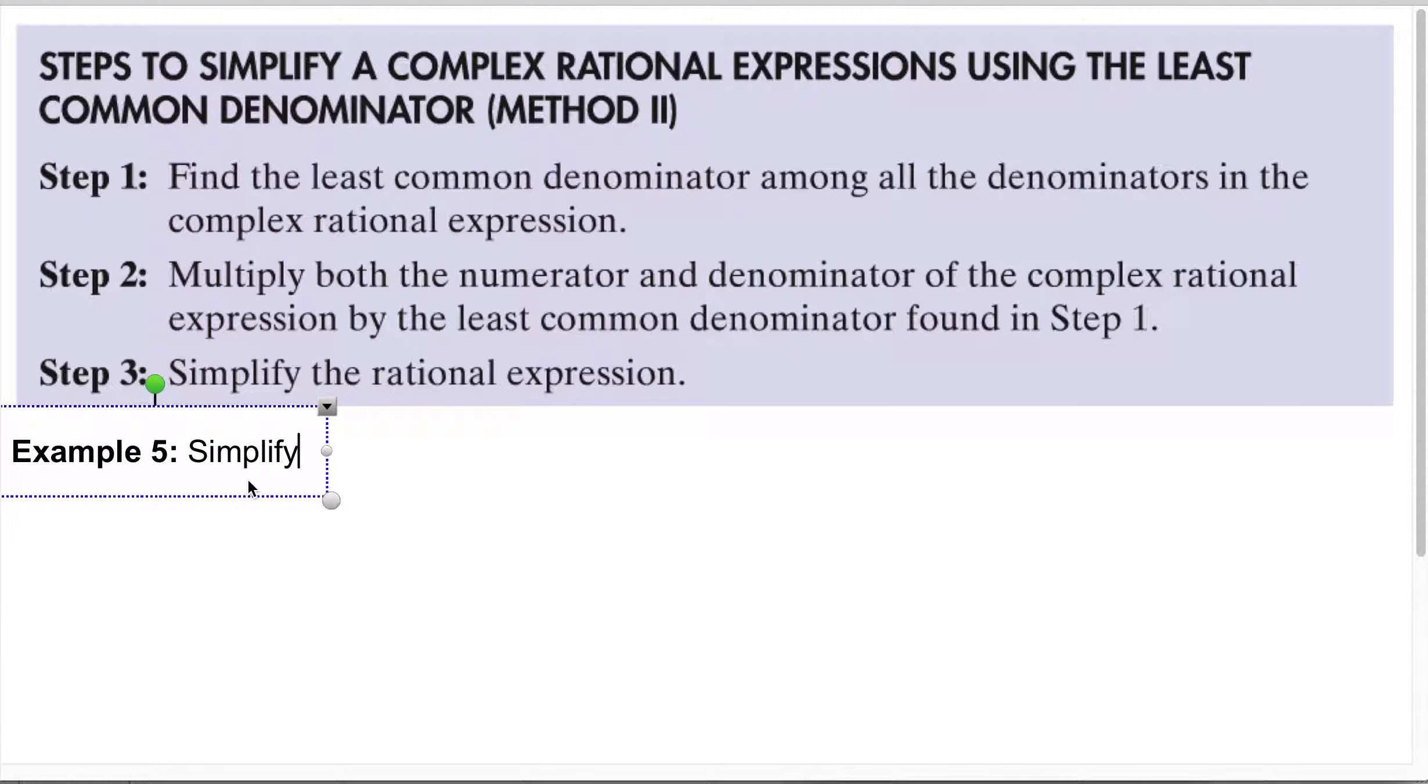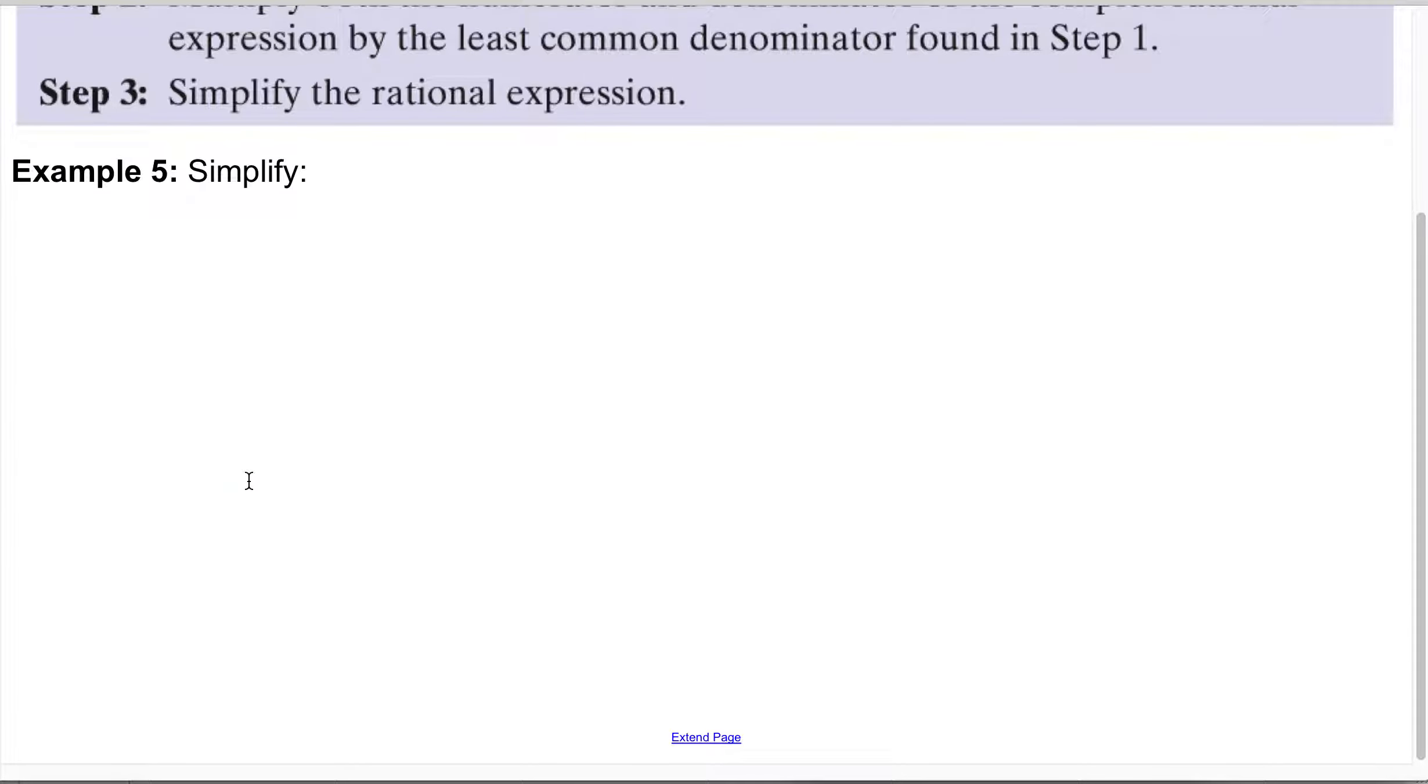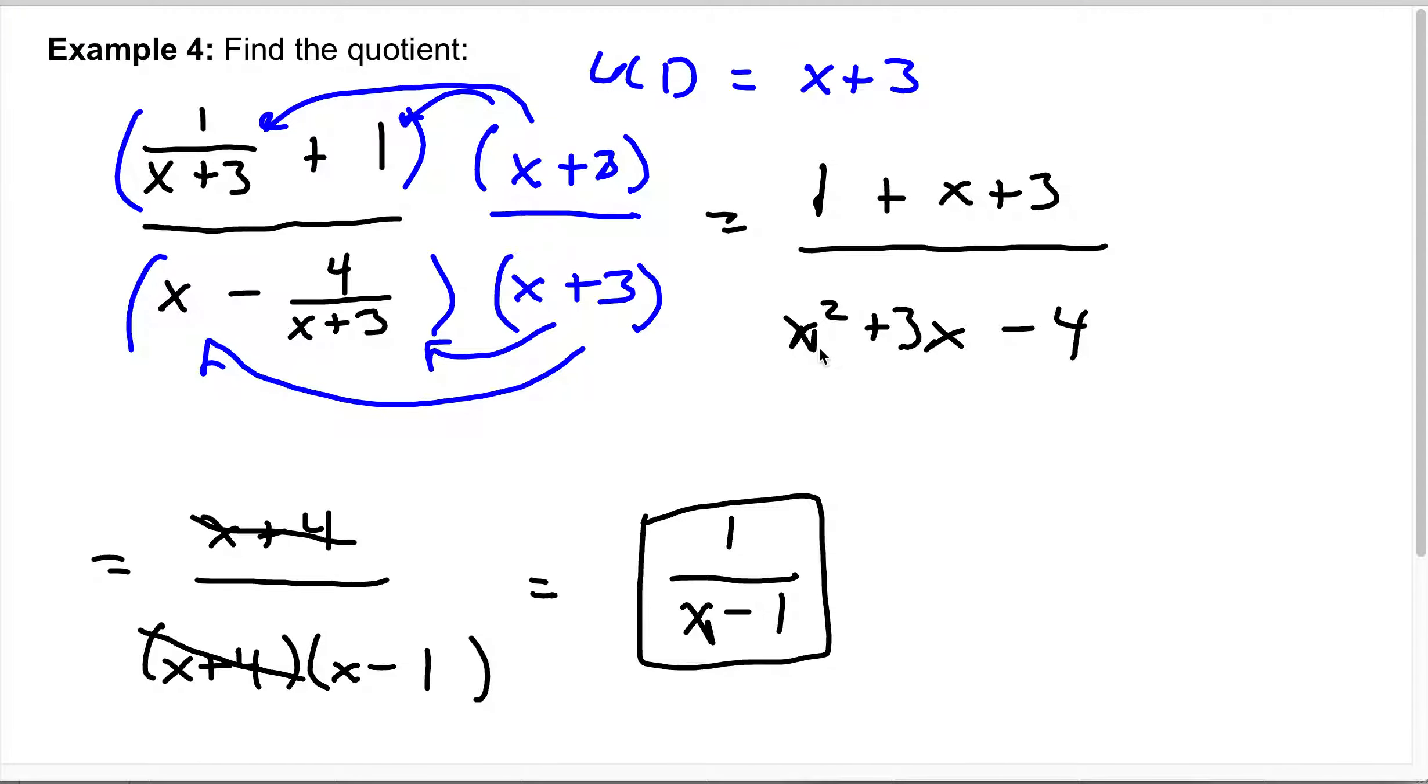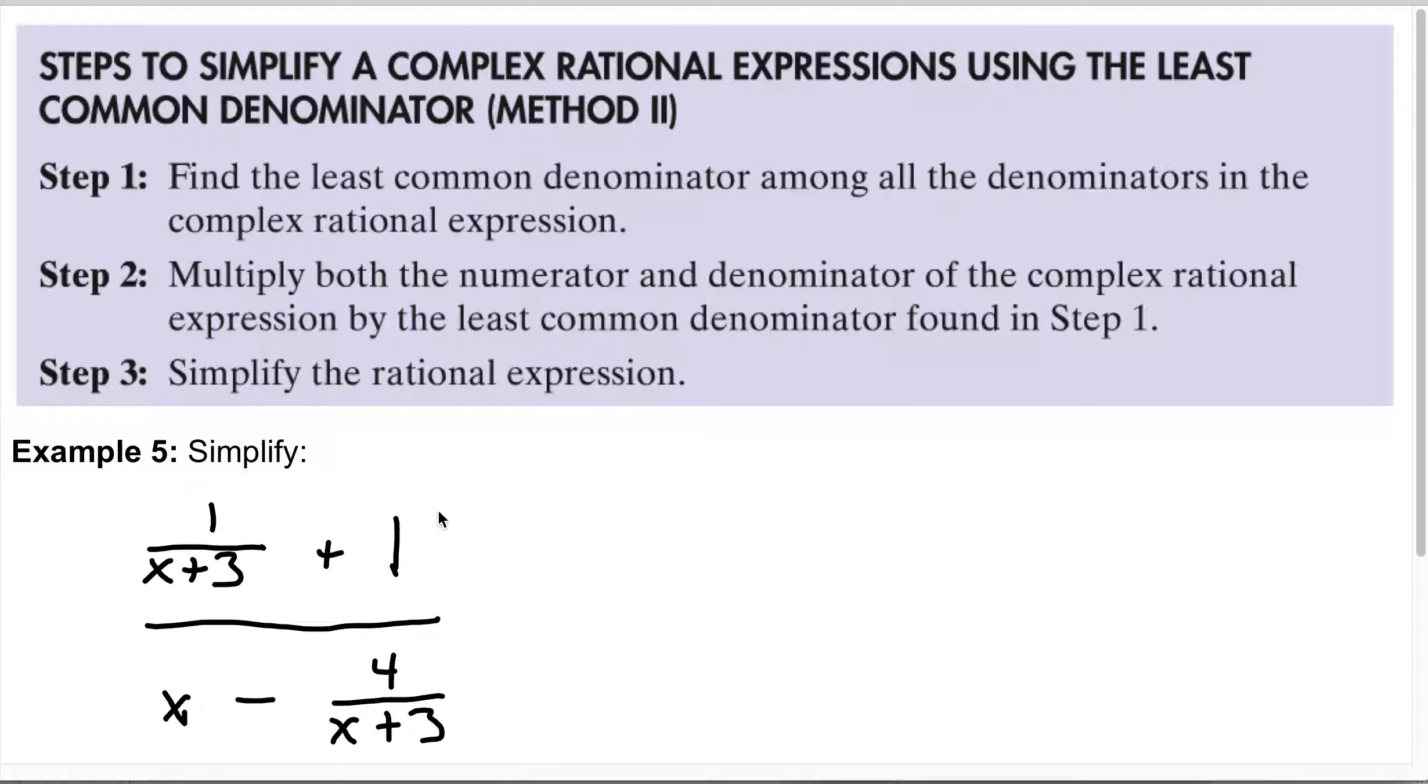We want to simplify. So we have x plus 3, 1 plus 1 under x minus x plus 3 under 4. Okay, now is this one - do we do this one already as well? Let's see. Yeah, so we're going to leave it as that. Let's see.